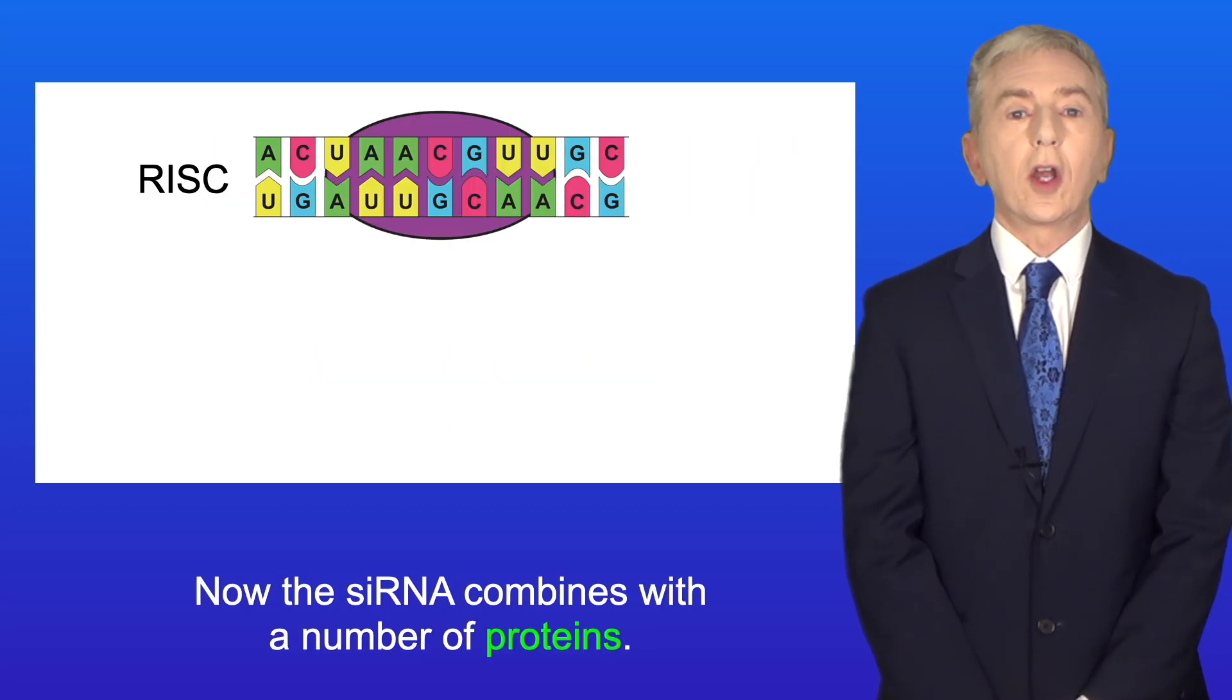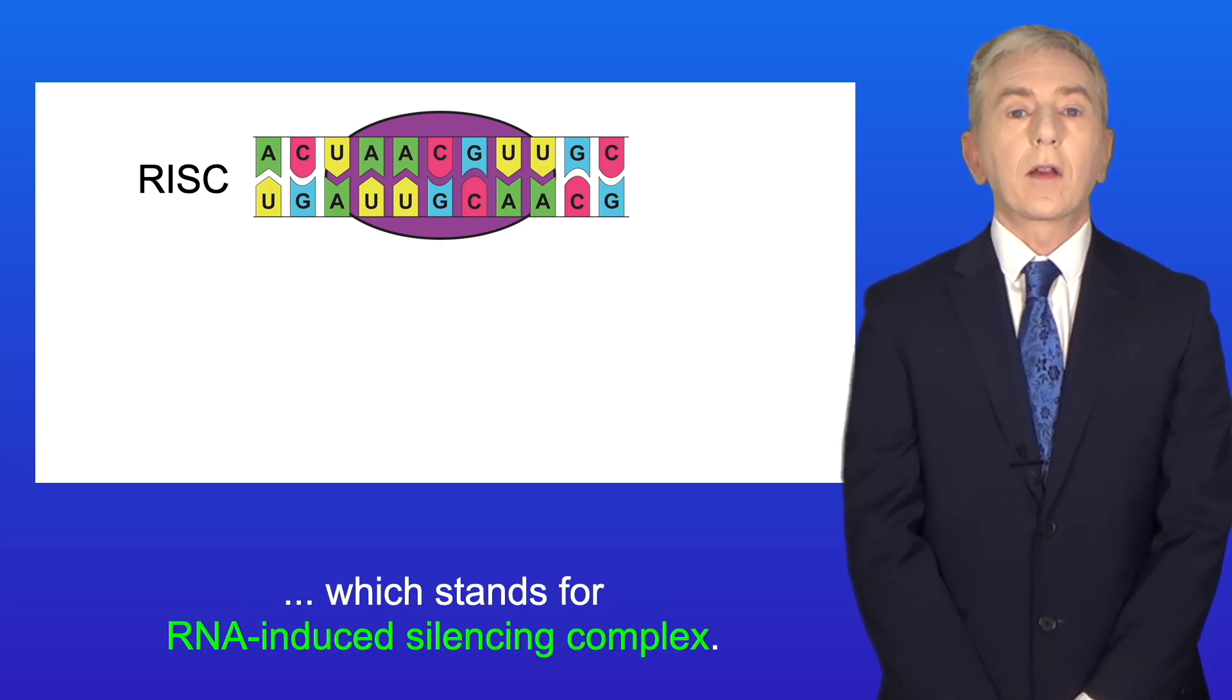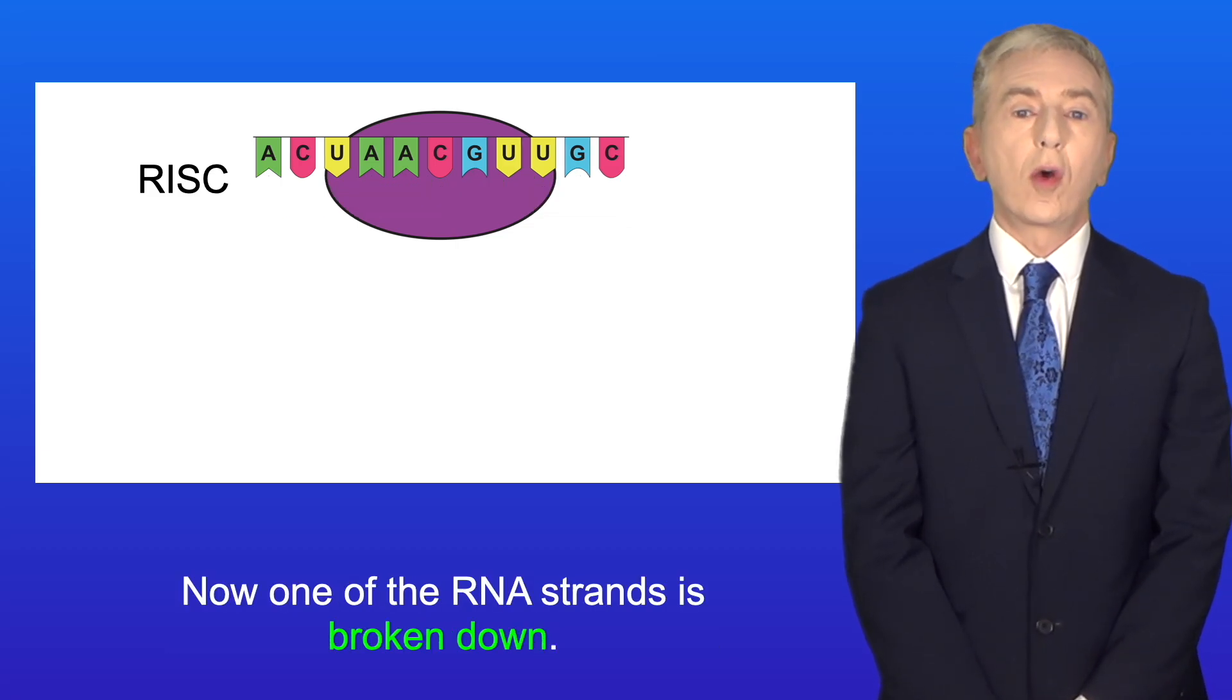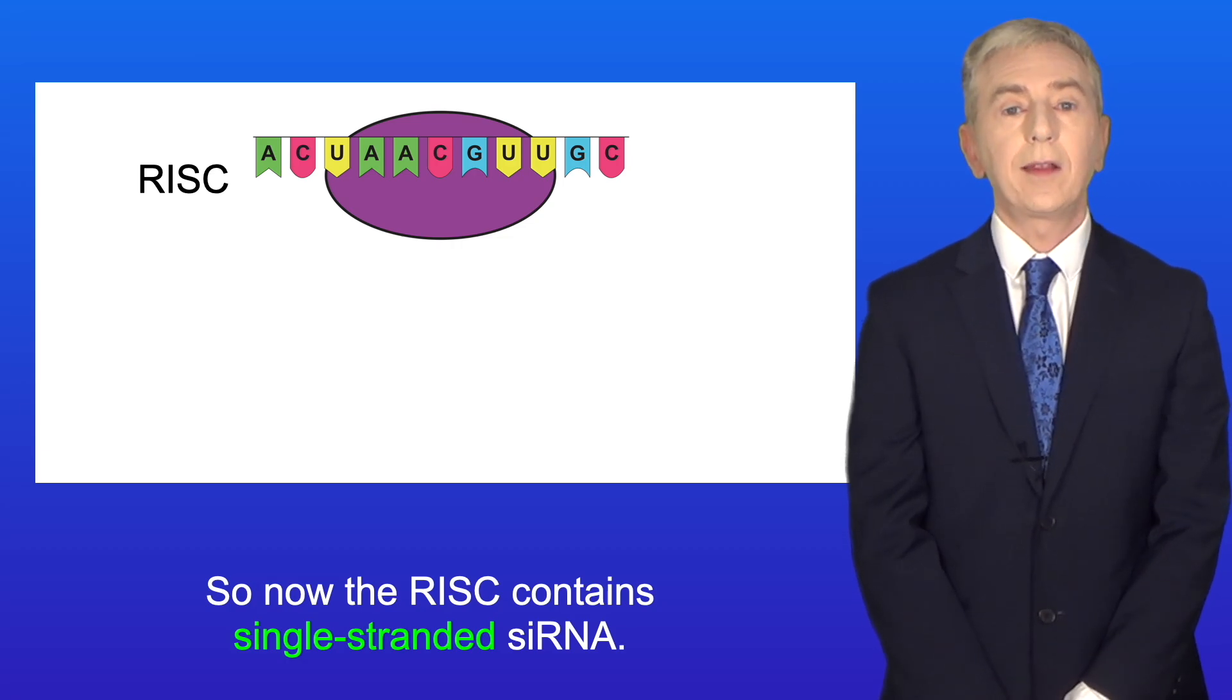Now, the siRNA combines with a number of proteins. We call this structure the RISC, which stands for RNA-induced silencing complex. Now, one of the RNA strands is broken down, so now the RISC contains single-stranded siRNA.